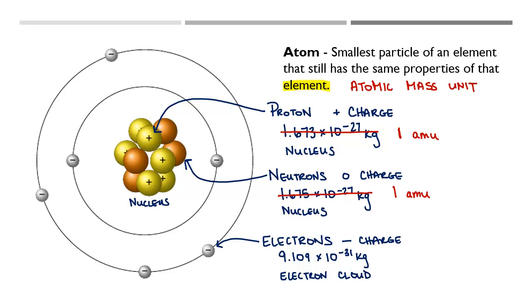So a proton is 1 amu, a neutron is 1 amu, and an electron is 0 amu.